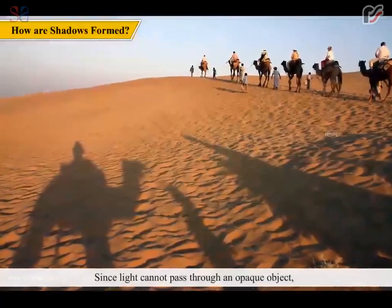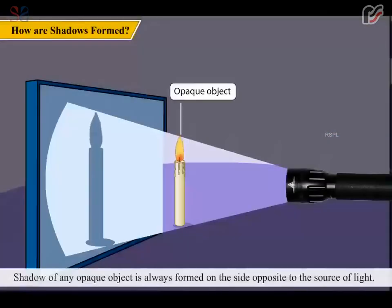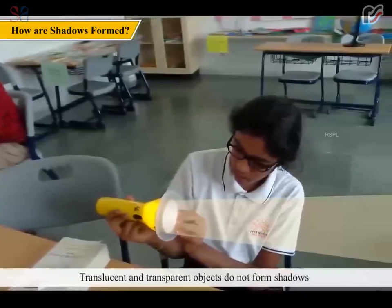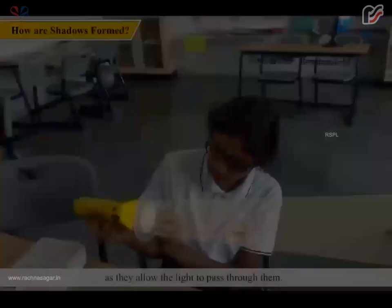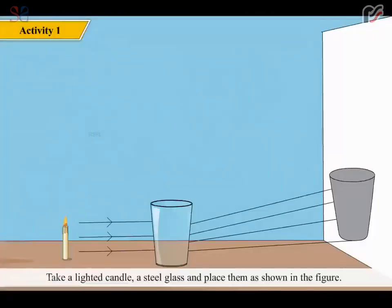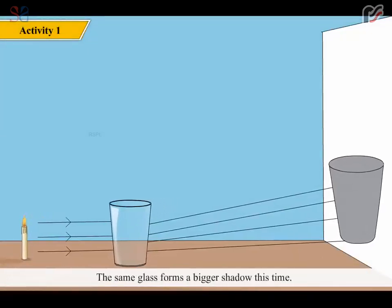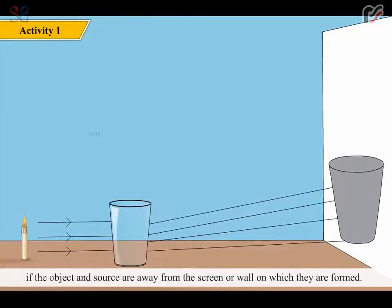Since light cannot pass through an opaque object, our bodies also form shadows when light falls on us. The shadow of an opaque object is always formed on the side opposite to the source of light. Translucent and transparent objects do not form shadows as they allow the light to pass through them. The size and direction of the shadow change with the distance of the source of light and the direction of the light. Take a lighted candle and a steel glass and place them as shown. Note the distance between the wall and the glass and measure the shadow. Now shift the glass and the candle away from the wall — the same glass forms a bigger shadow this time. This tells us that shadows will be bigger if the object and source are farther from the screen or wall.